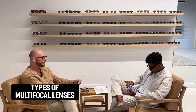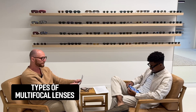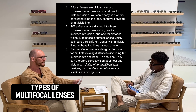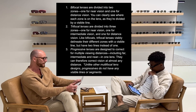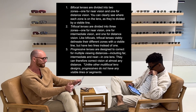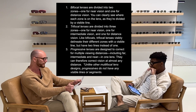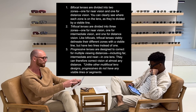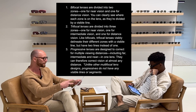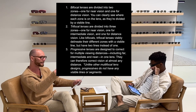When it comes to the types of multifocal lenses — we talked around this already — there are bifocal lenses, which you can read through. There are two zones. And then trifocal lenses, where there are actually three zones, but they're lined.